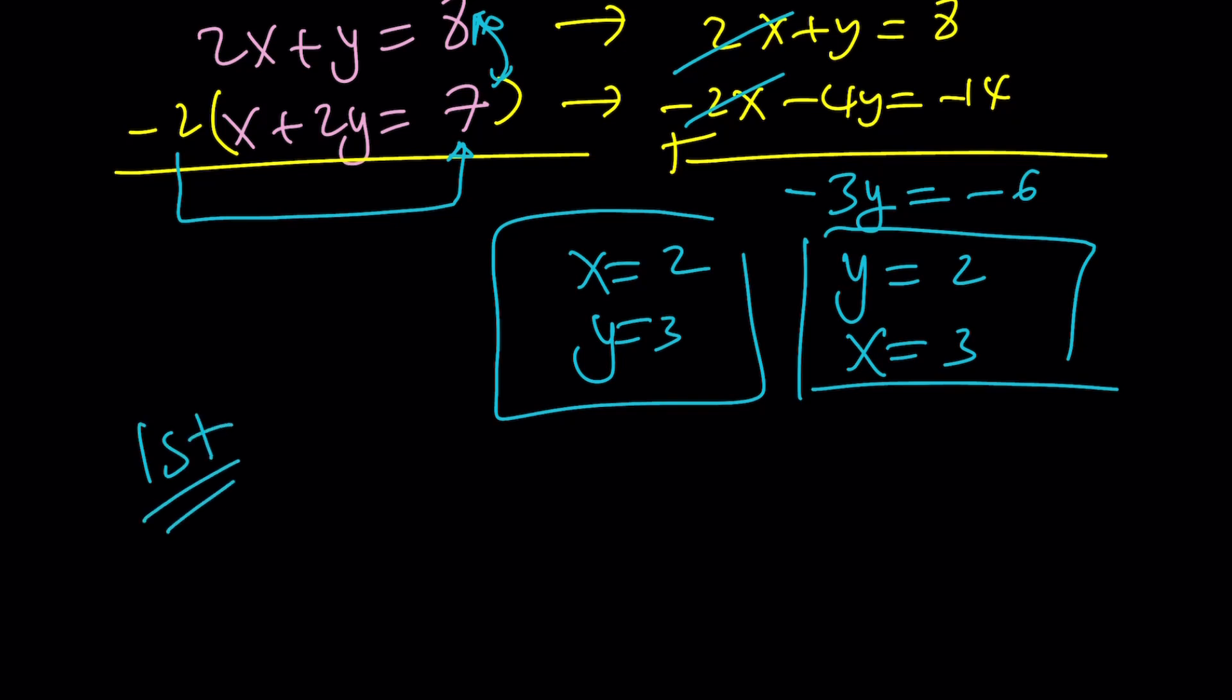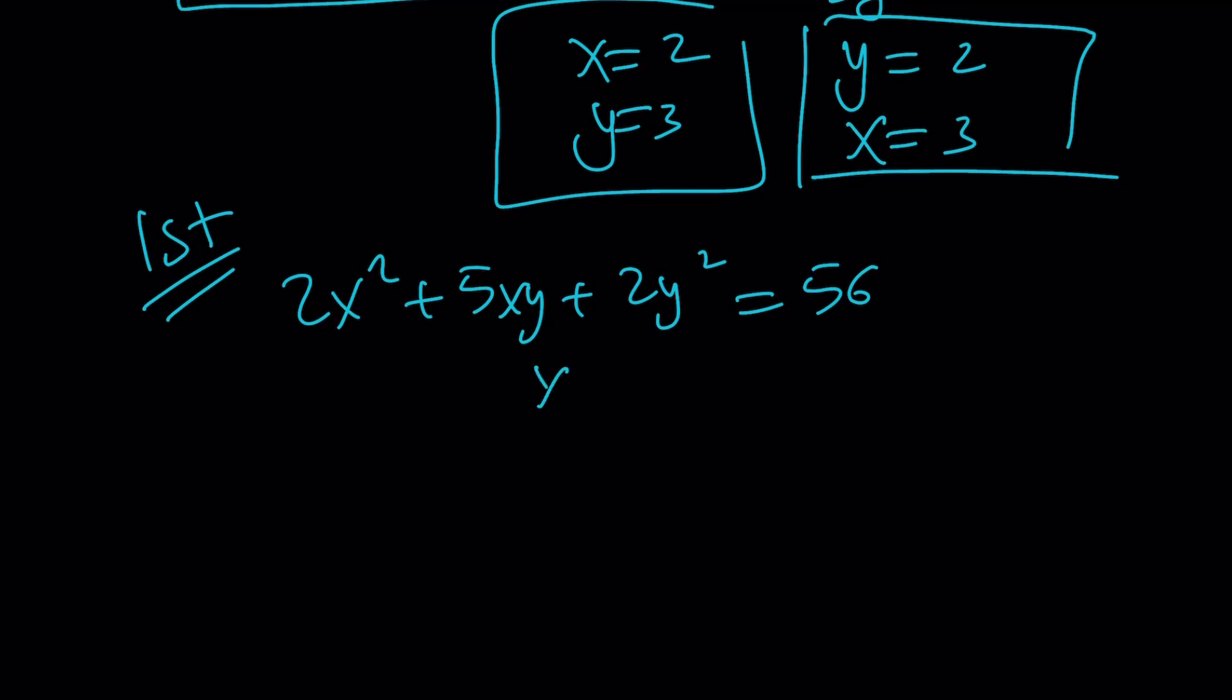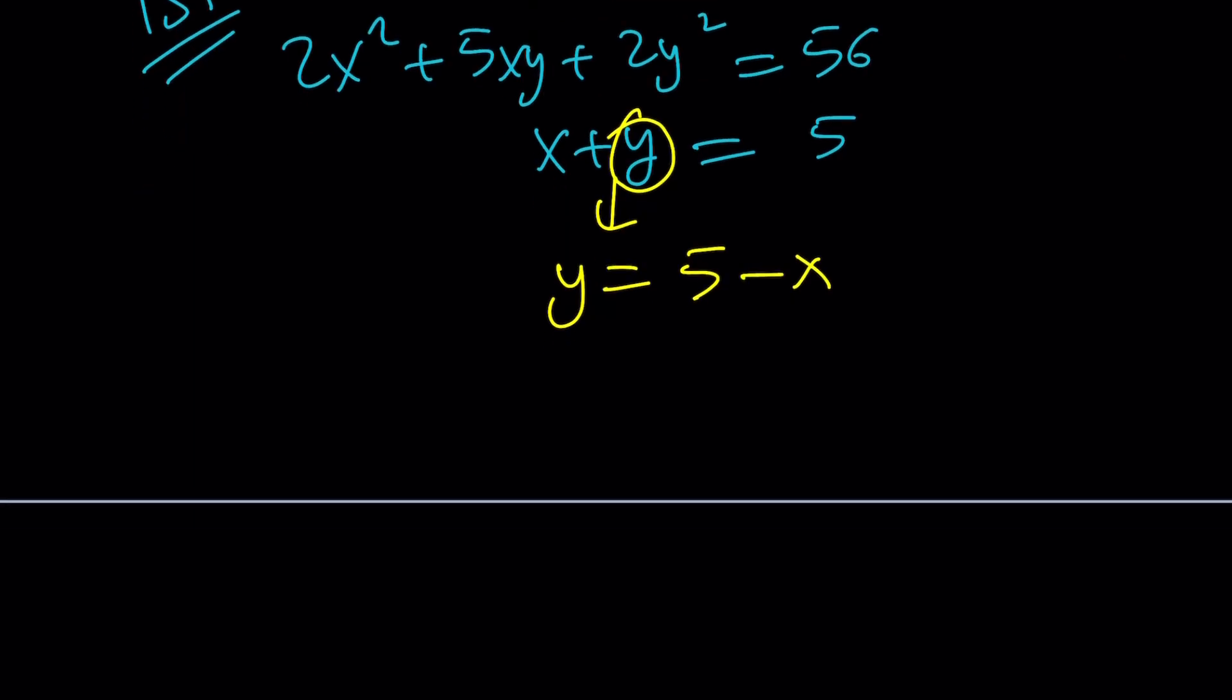For my first method, I'm going to use substitution. For our second method, we used factoring and elimination. Now we're going to use substitution. To be able to use substitution, I'm going to isolate y. That equals 5 - x. And then I can go ahead and substitute that here.